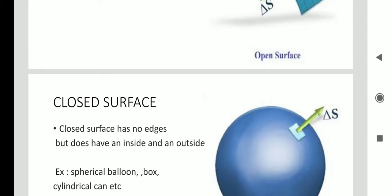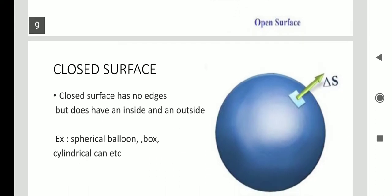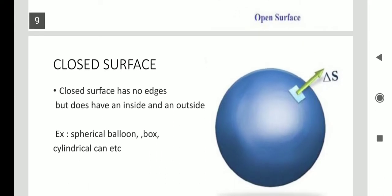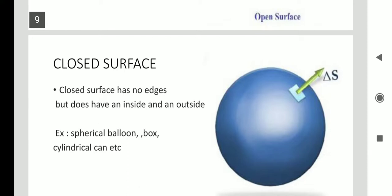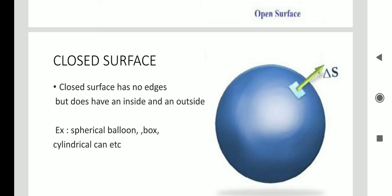A closed surface is a surface without any edges. A closed surface contains both an inside and outside part. Examples are a spherical balloon, a box, or a cylindrical can.